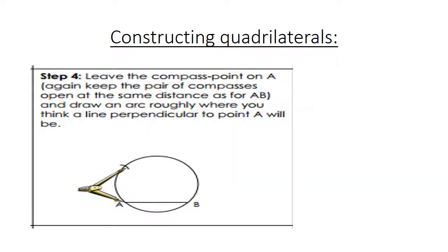Step 4. Leave the compass point at A. Again, keep the pair of compasses open at the same distance as from A to B. Draw an arc roughly where you think a line perpendicular to the point A will be.